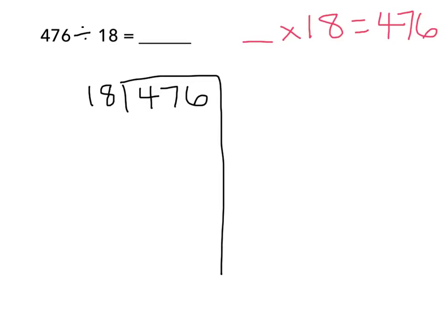I'm going to think 18 times 10 equals 180, so 18 times 20 is going to be 360. Now I'm going to subtract, and I notice that I'm left with 116.